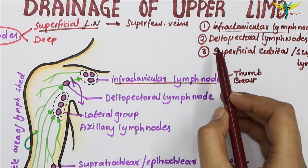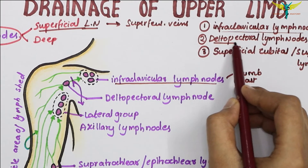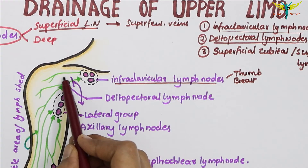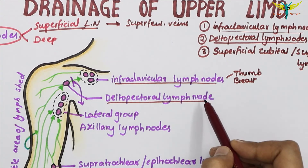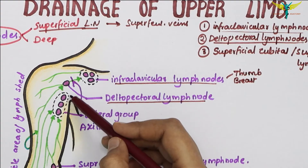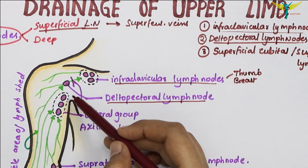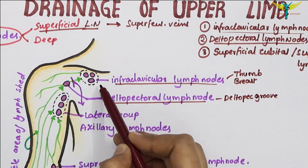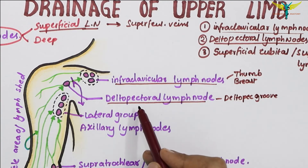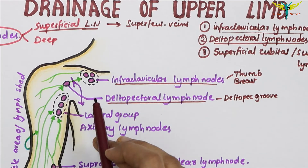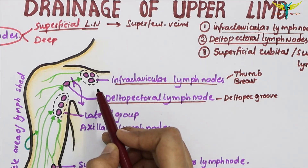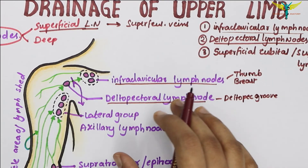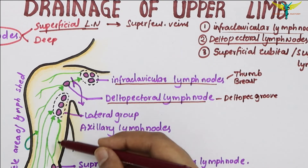The second group of superficial lymph nodes are the delto-pectoral lymph nodes. They lie in the delto-pectoral groove, along the cephalic vein, just below where it pierces the deep fascia. The delto-pectoral lymph node is sometimes described as a displaced infraclavicular lymph node. It drains lymph from the breast and adjoining structures.